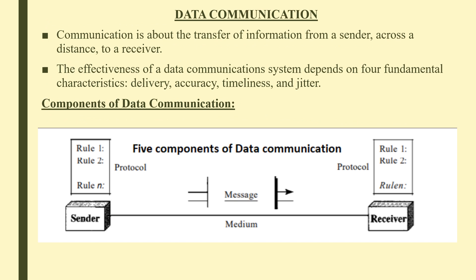What is data communication? Communication is about the transfer of information from a sender across a distance to a receiver. Using electricity, radio waves or light, information and data are transmitted through a physical medium such as wire, cable or even the atmosphere.